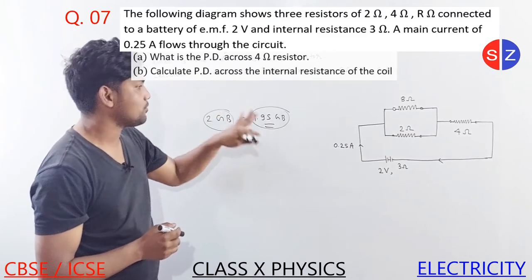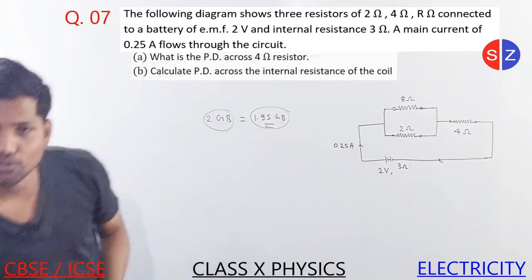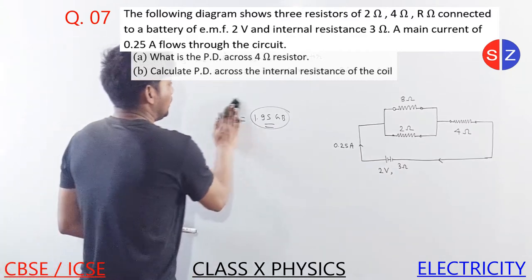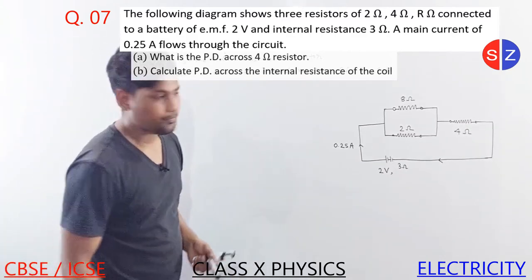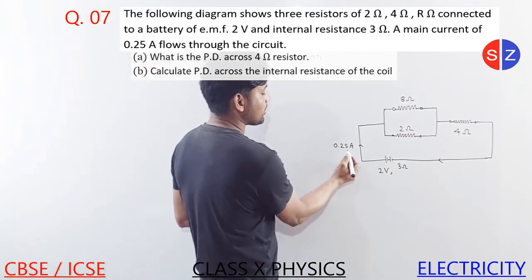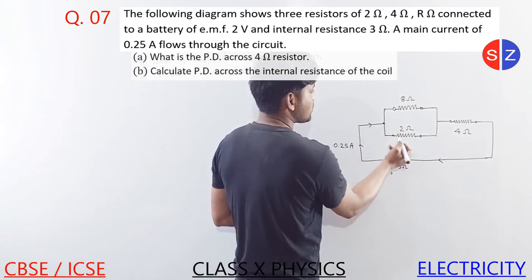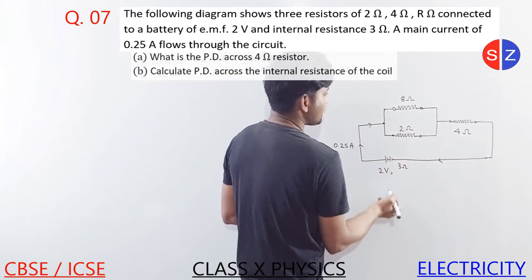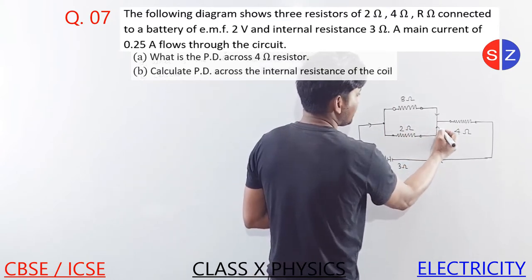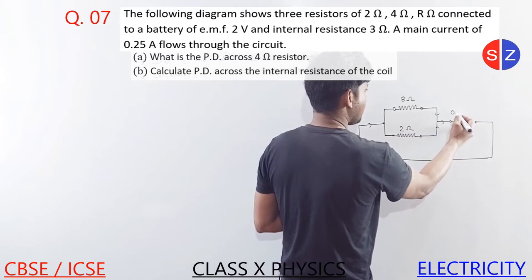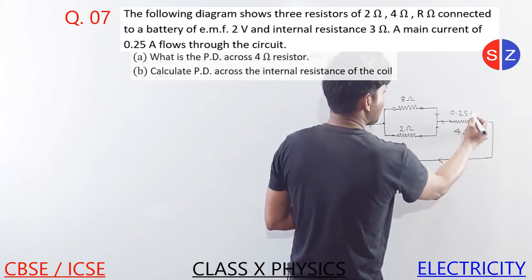What is the PD? We need to find it. How will we do this? First, the main current provided is 0.25 ampere. The current will flow through the circuit. These two parallel resistors are attached, and the current is 0.25 ampere.